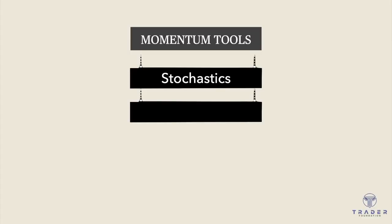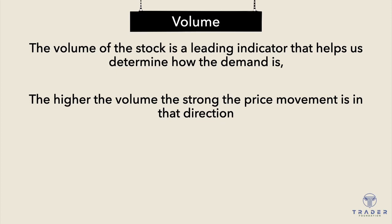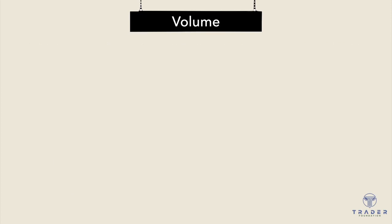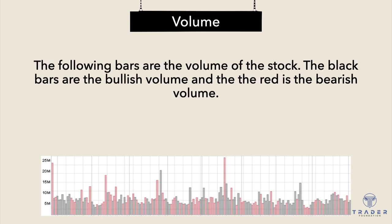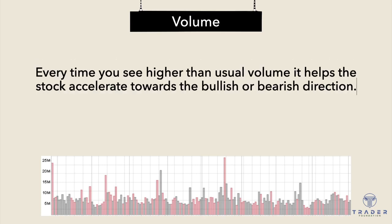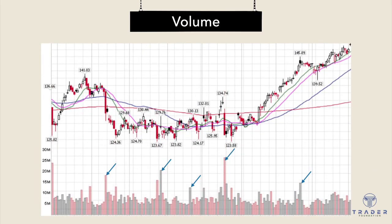Now that we understand what the stochastics are, we're going to talk about one of the most powerful tools out there: volume. The volume of the stock is a leading indicator that helps us determine how the demand is. The higher the volume, the stronger the price movement is in that direction. The black bars are the bullish volume and the red is the bearish volume. Every time you see higher than usual volume, it helps the stock accelerate towards the bullish or bearish direction.